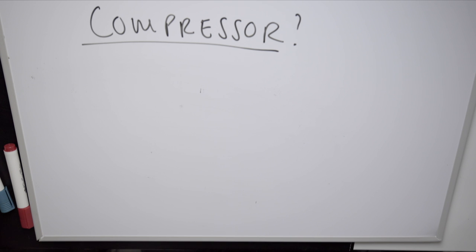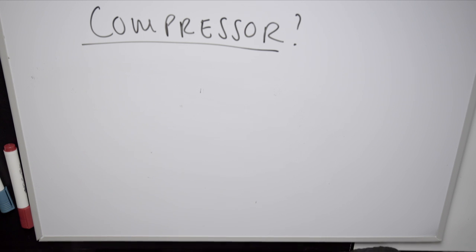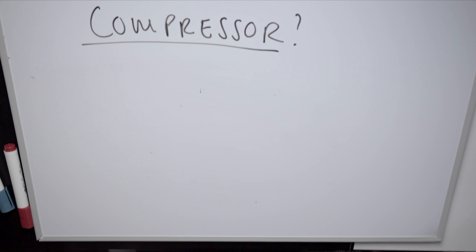The other three processor types: the noise gate is an automatic muting control — once the signal falls below a threshold it turns off completely, useful for muting page-rustling in pauses during a voice-over. The limiter is an extreme version of the compressor, typically with a ratio of 20:1 or 50:1 — it's like a brick wall, so no matter how loud the incoming signal gets it won't be allowed out any louder. The expander is a softer version of the noise gate — it closes more gently, which can sound more natural.